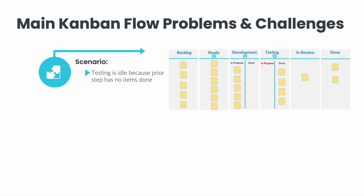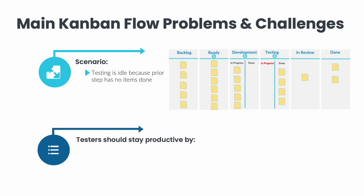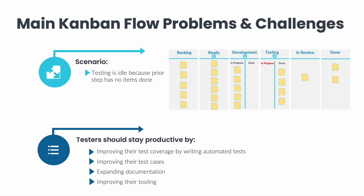Testers might find themselves without any user stories for anywhere from a couple of hours to even a day or two. In this case, the testers should first reach out to the developers and see if they can assist with anything on the implementation side. If the testers are not able to help on the development side, they should stay productive by improving their test coverage by writing automated tests, improving their test cases, expanding documentation, or improving their tooling. They should always be working on improvements that will make them more efficient and improve the quality of testing in the future.